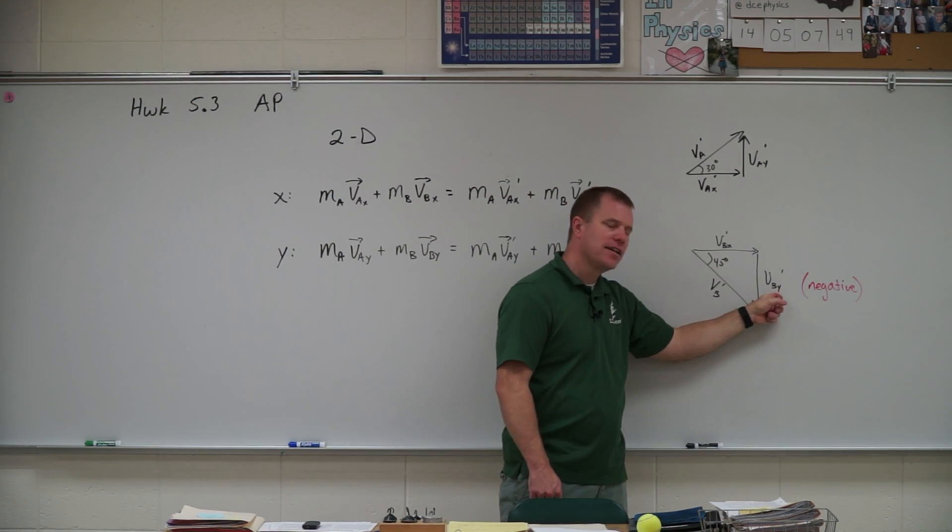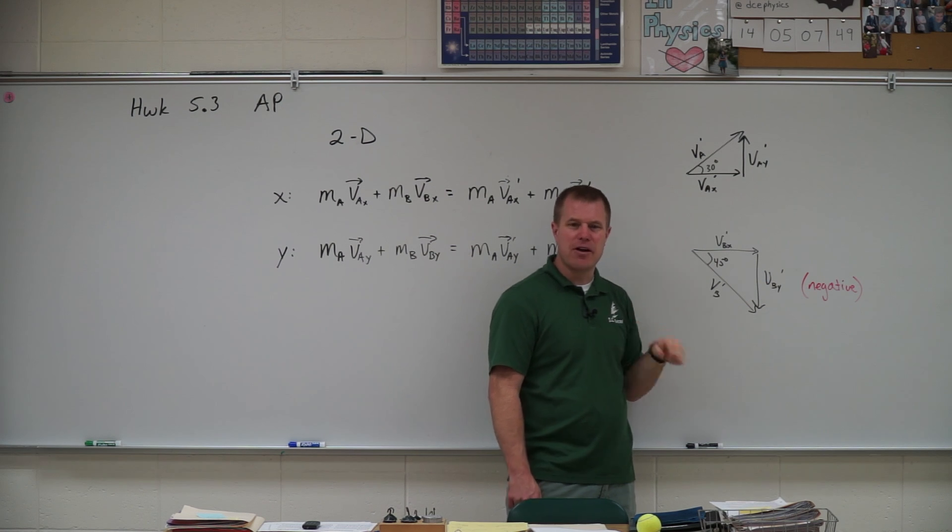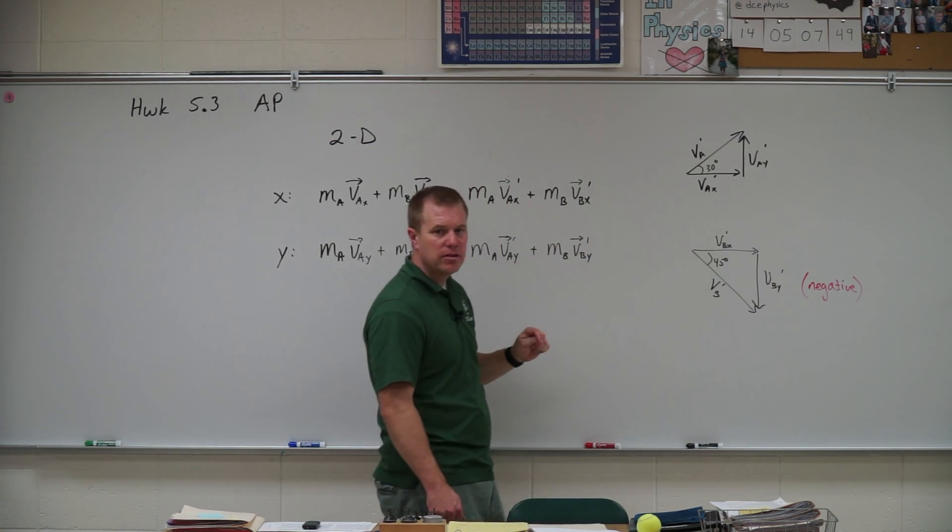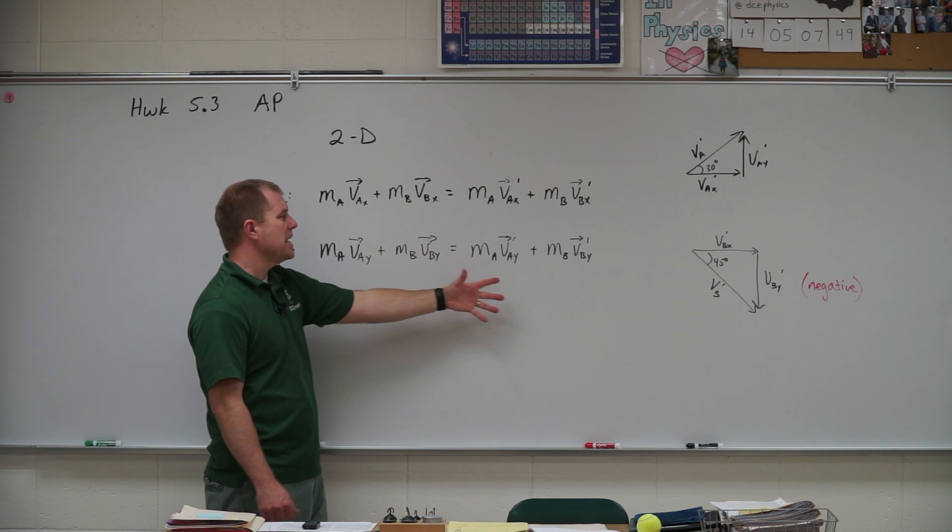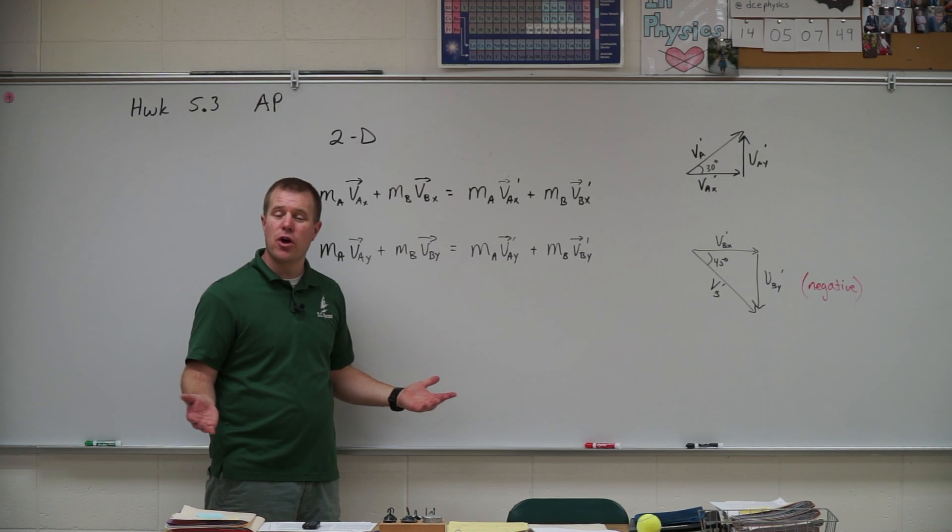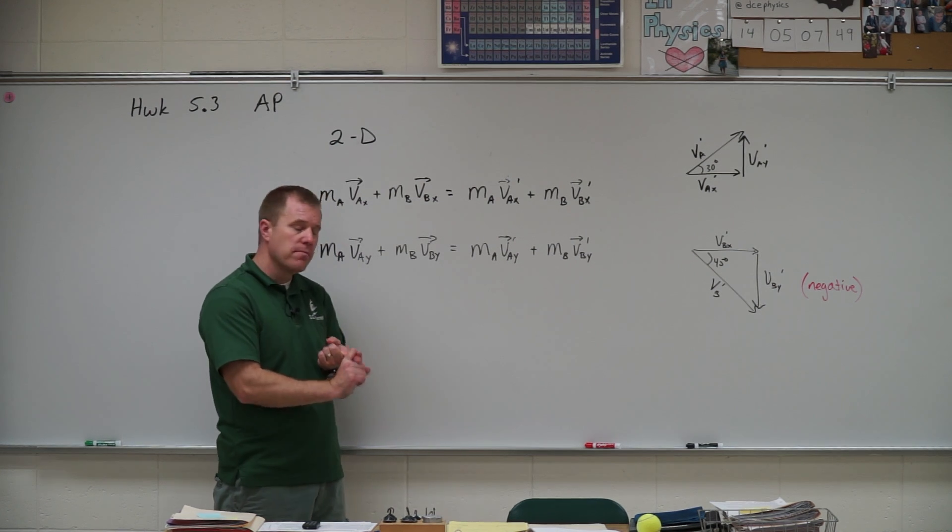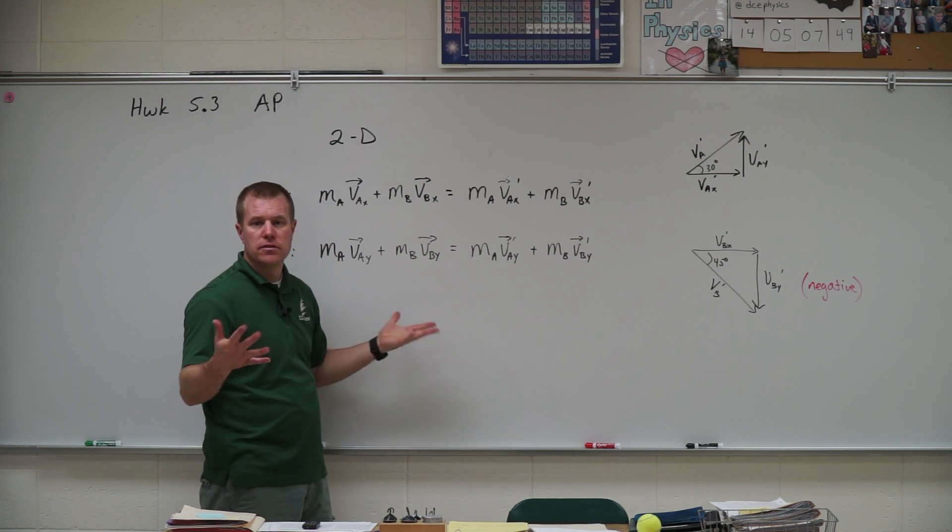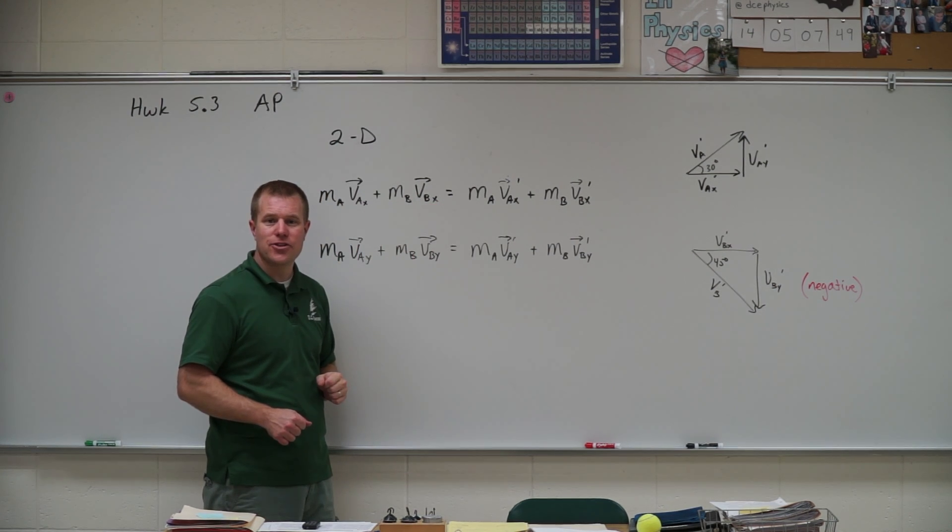Remember to put a negative sign on this velocity down here because it's pointing down. Now we can put those into our equation here and it's a system of two equations, two unknowns, so solve for one of them, substitute into the other, and solve for the last. There's your hint.